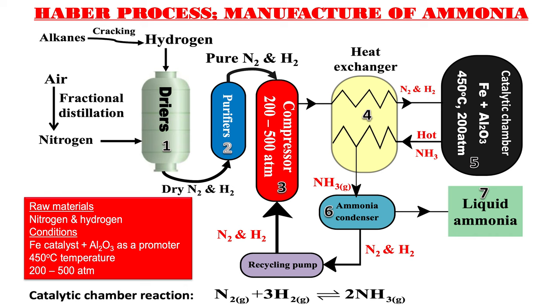If you look at the Haber process, it is used in the manufacture of ammonia and is named after scientist Haber. The raw materials required are nitrogen and hydrogen. What is the source of hydrogen? One source is cracking of long-chain alkanes. Another source is from natural gas. In the exam you can be asked to give many other sources: we can get hydrogen by electrolysis of brine, or by electrolysis of acidified water. The other raw material is nitrogen, and we get nitrogen by fractional distillation of liquefied air.